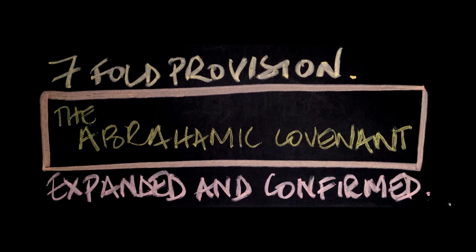Here is the kicker — this is where you need to pay attention. The sevenfold provision is the basic issue. It is expanded and confirmed as we go through the book of Genesis. That is vital that you grasp. Please get that, because if you don't understand it — and we're going to cover this in quite a bit of depth — you won't fully grasp what follows.